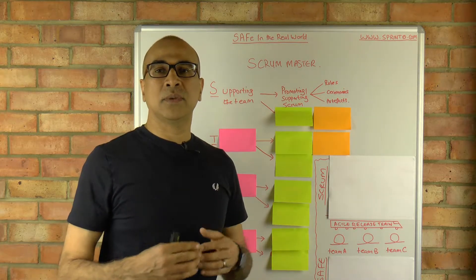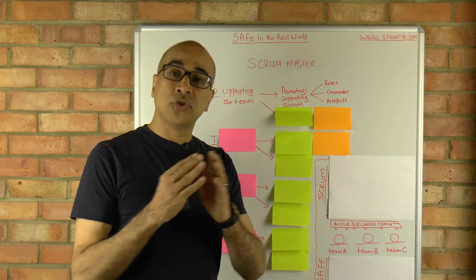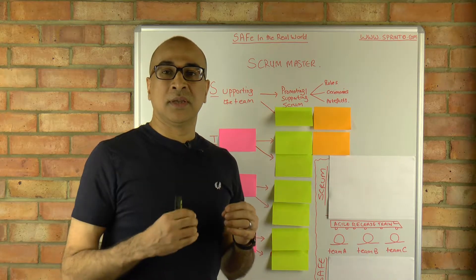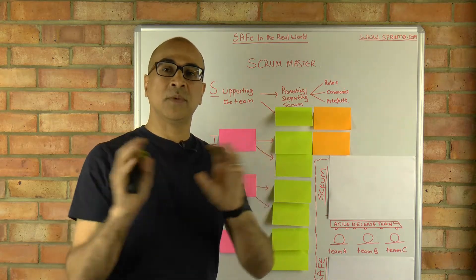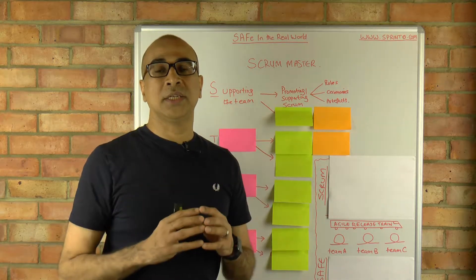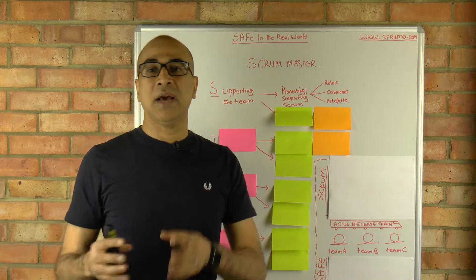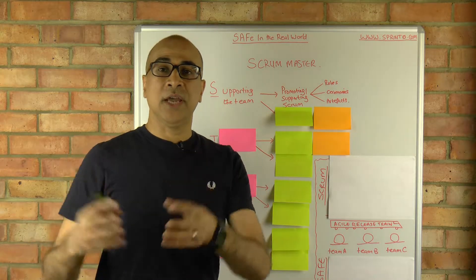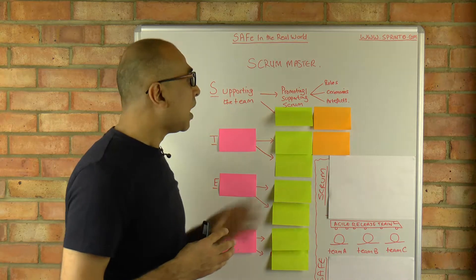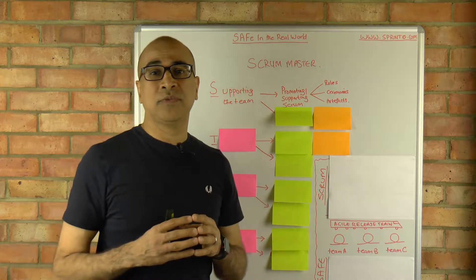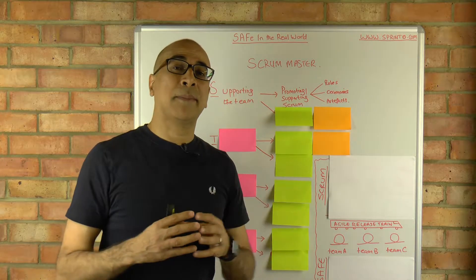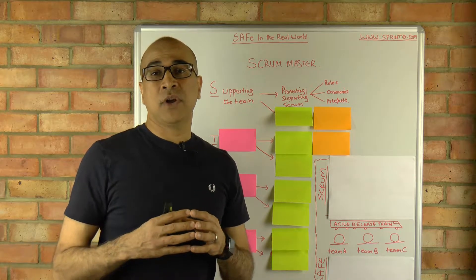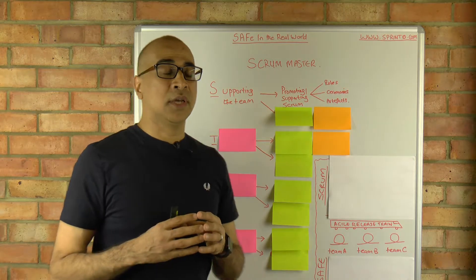The ceremonies are the events or meetings that occur during the Scrum lifecycle — things like sprint planning, the daily stand-up (a 15-minute meeting where the team discusses what they did the previous day and what they're doing today), backlog refinement, sprint review, and retrospective. Finally, the Scrum Master is also responsible for the artifacts, such as the product backlog, the sprint backlog, and tracking progress through things like burndowns.